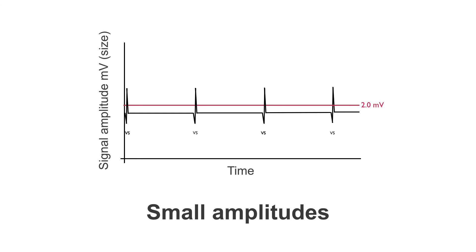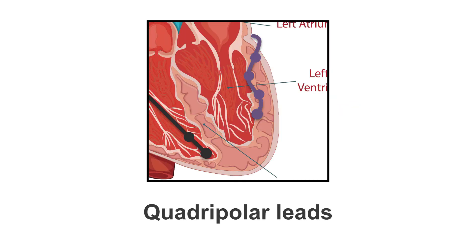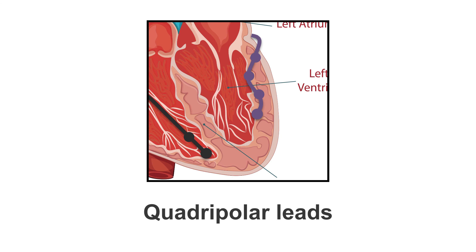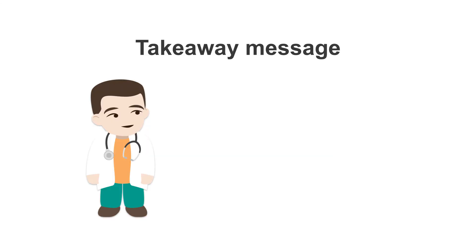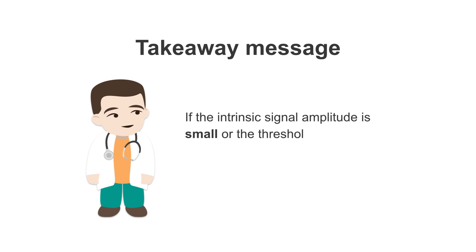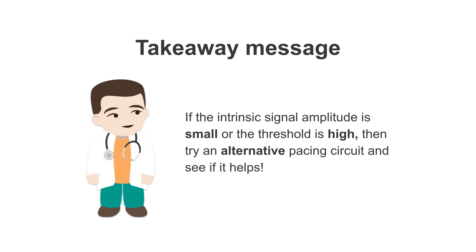If we consider a quadrupolar lead, think about all the possible options we have and all the vectors on offer — it's really incredible. A quadrupolar lead gives us a huge amount of options. So, your takeaway message: if the intrinsic signal amplitude is small or the threshold is high, then try an alternative pacing circuit and see if that helps.